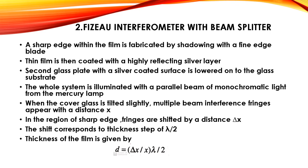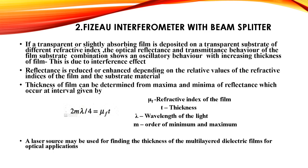The shift corresponds to a thickness step of lambda/2. The thickness of the film is given by d = (delta x / x) × (lambda/2). If a transparent or slightly absorbing film is deposited on a transparent substrate of different refractive index, the optical reflectance and transmittance behavior shows an oscillatory variation with increasing film thickness, due to the interference effect. Reflectance is reduced or enhanced depending on the relative refractive indices of the film and substrate. The thickness is determined from maxima and minima of the reflectance, which occur at intervals given by 2m × (lambda/4) = mu_f × t, where mu_f is the refractive index of the film, t is the thickness, lambda is the wavelength, and m is the order of minimum or maximum.